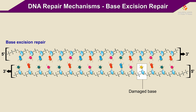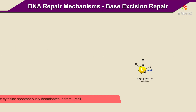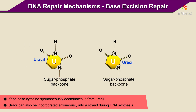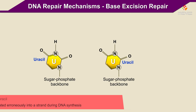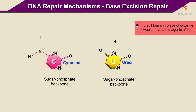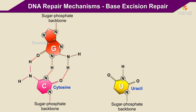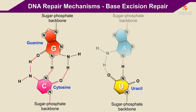For example, certain bases that are not supposed to be in DNA, such as uracil, are removed by Base Excision Repair. If the base cytosine spontaneously deaminates, it forms uracil. Uracil can also be incorporated erroneously into a strand during DNA synthesis. If uracil forms in the place of cytosine, it would have a mutagenic effect. Whereas cytosine forms a base pair with guanine, uracil forms a base pair with adenine.